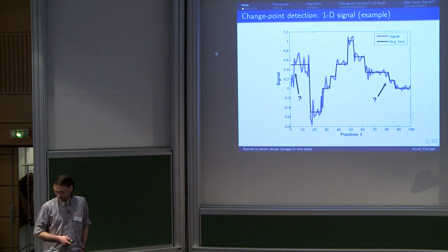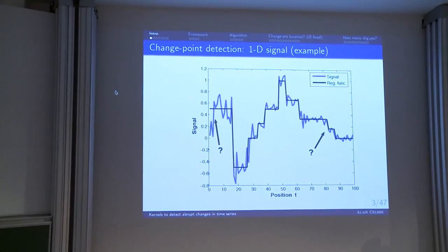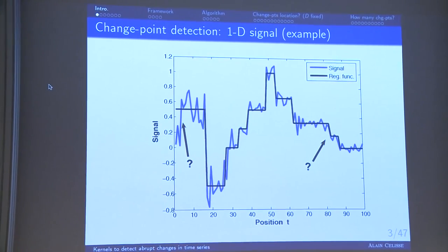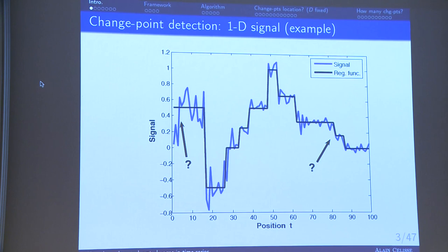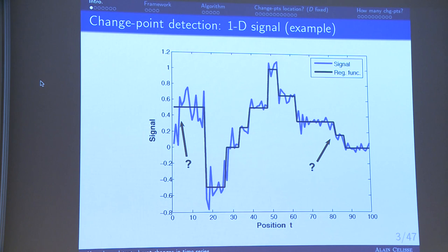Let's start with the simplest problem, which is detecting changes in the mean of a signal. You observe a blue curve which has been generated from a regression function shown in black — it is piecewise constant. The problem is that you observe abrupt changes in the blue curve, and the main question is whether these changes are related to an abrupt change in the regression function or not. Some of them are perhaps difficult to localize and others are clearly false positives. How to do this in an automatic way?